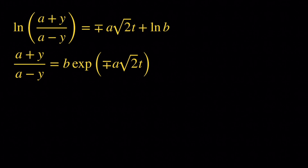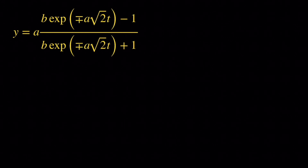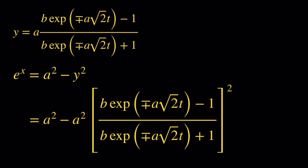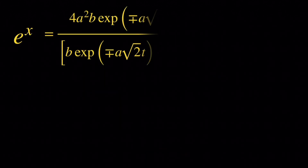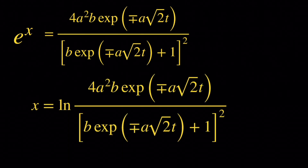Now we can solve this for y. We get y equals b times exponential of plus or minus a root 2 t minus 1, all over b times exponential of plus or minus a root 2 t plus 1. Now we can find x. Recall that e to the x is simply a squared minus y squared. We replace y, simplify, and get that e to the x equals 4a squared b times e to the plus or minus a root 2 t, divided by (b times exponential of plus or minus a root 2 t plus 1) squared. Now that we have e to the x, we can find x by taking the natural log of that quantity.